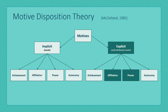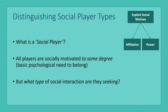Our premise is that there are various ways to play socially. We know that human beings share a basic psychological need to belong and to some extent we are all social, so we aim to distinguish people by how they wish to socially interact. The affiliation motive describes players who seek harmonious social interactions, and the power motive describes players who want to impress, lead, help, or intimidate others.